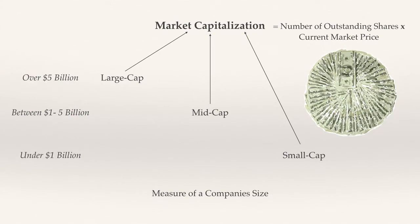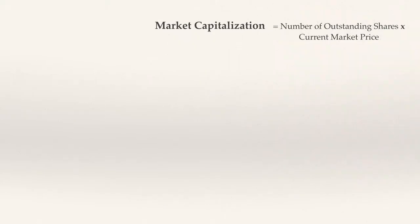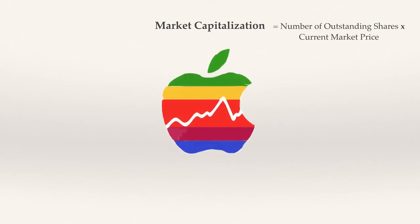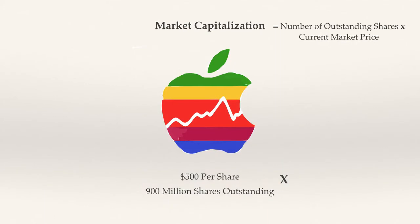Let's look at a quick example to illustrate the concept. Say Apple has a stock price of $500 per share and has 900 million shares outstanding. If you were to multiply both figures, you would find out that its market capitalization stands at $450 billion, earning it a spot as a large cap company. Larger cap companies will tend to be much less vulnerable to the ups and downs of the economy, in large part due to their huge financial reserves.